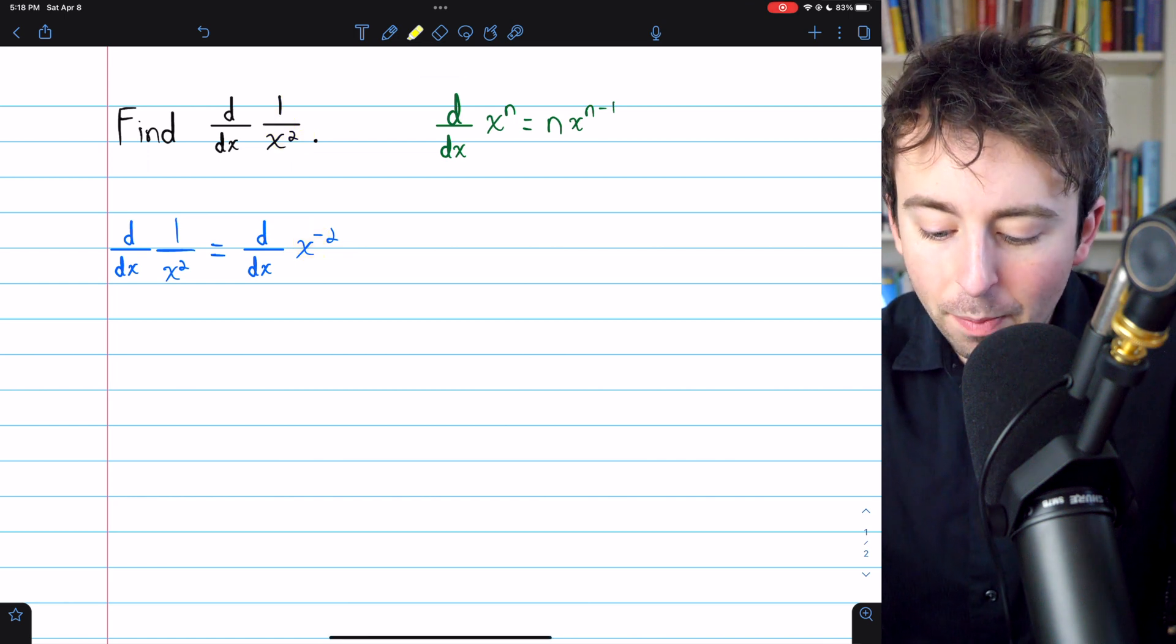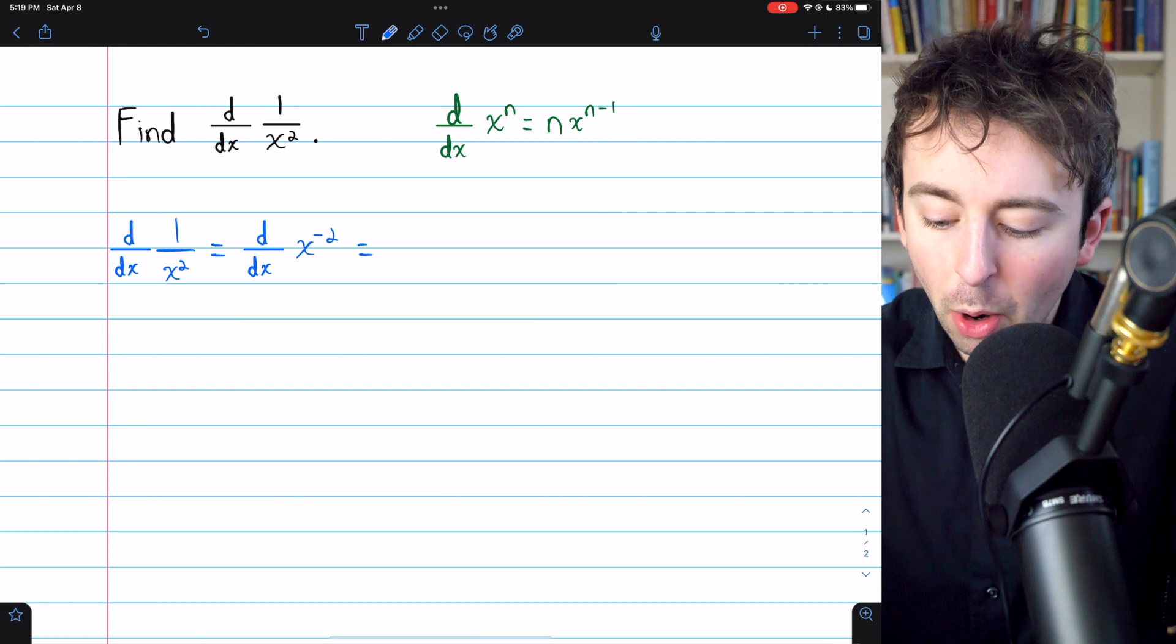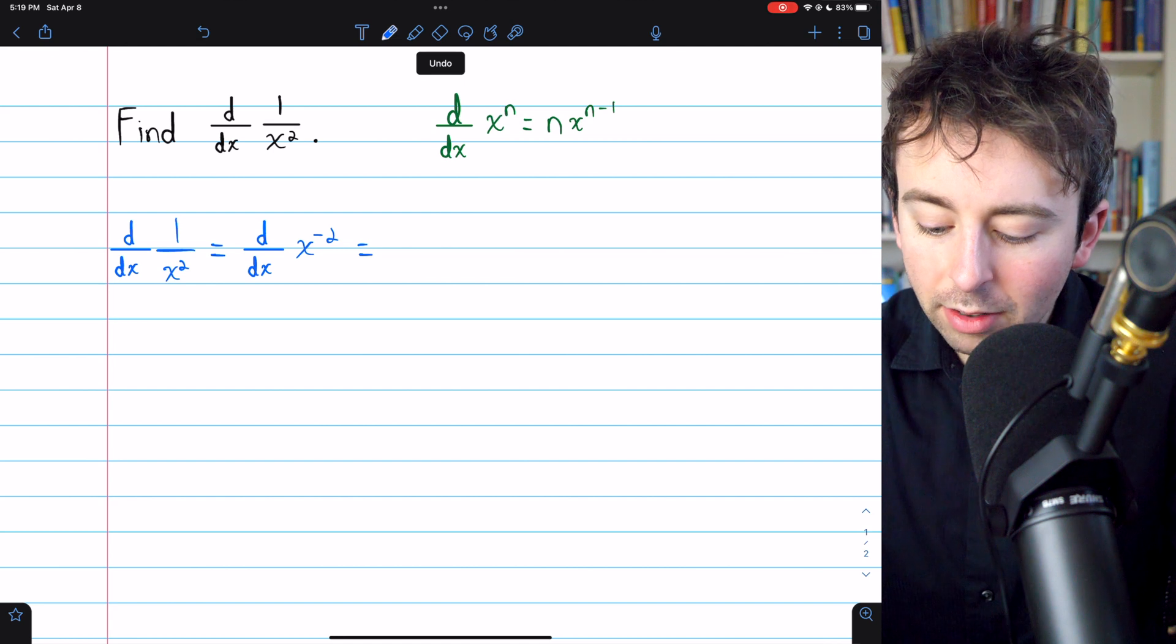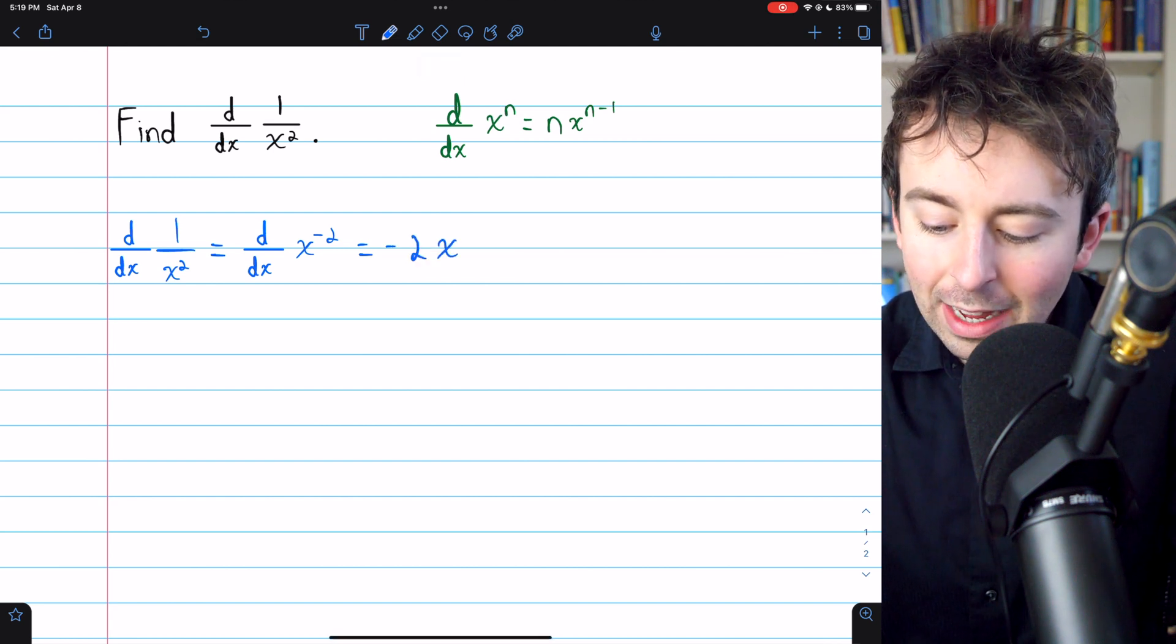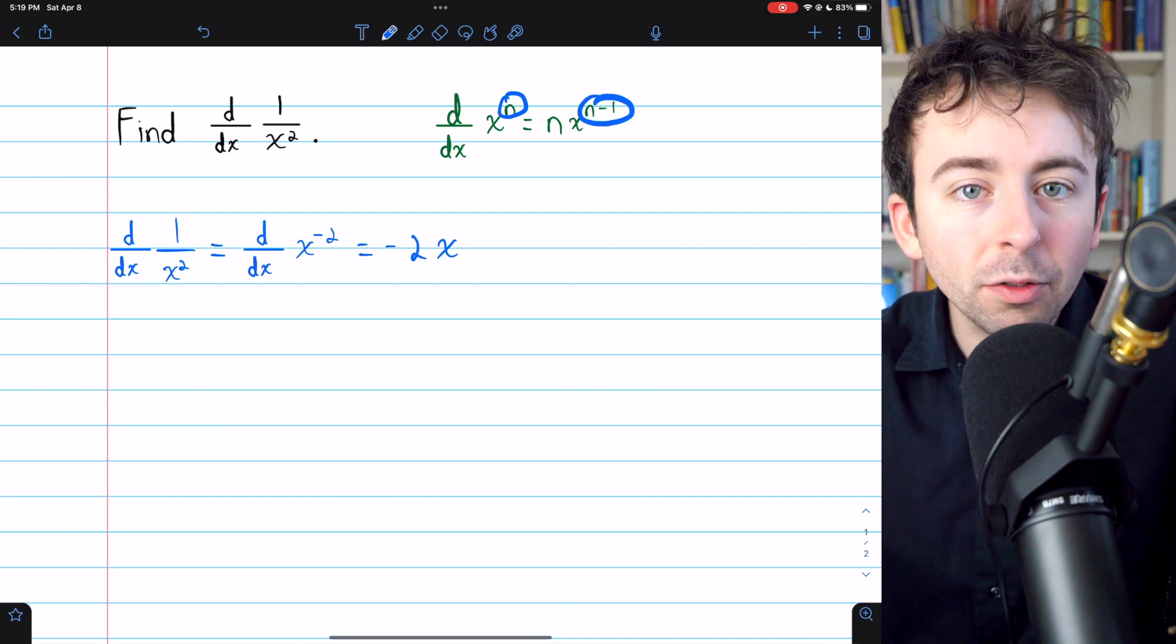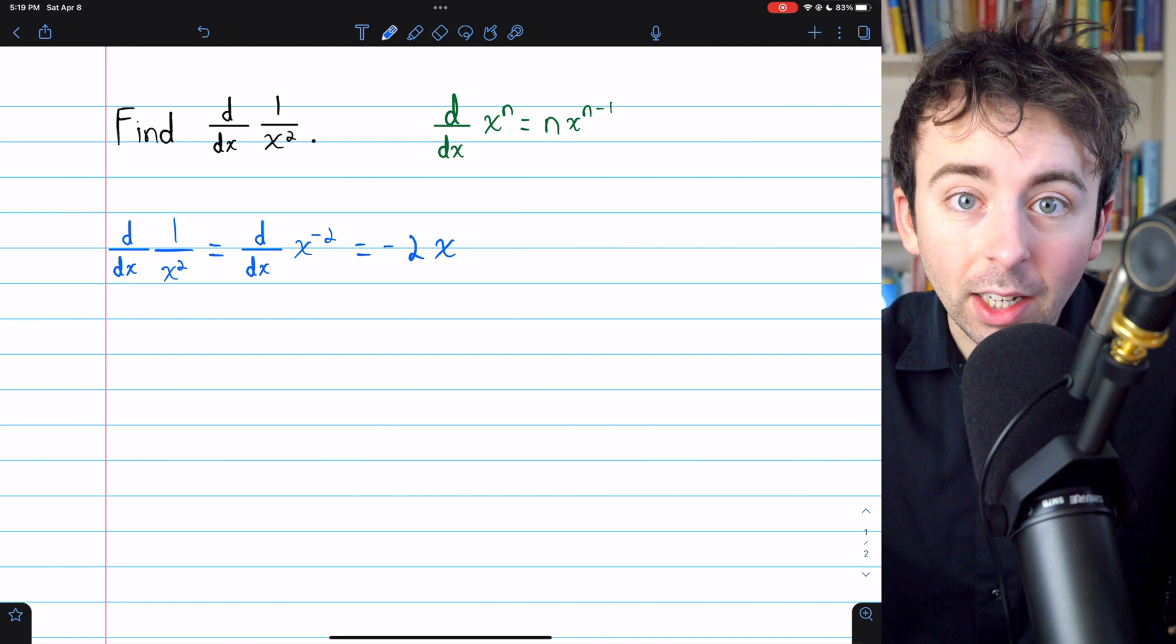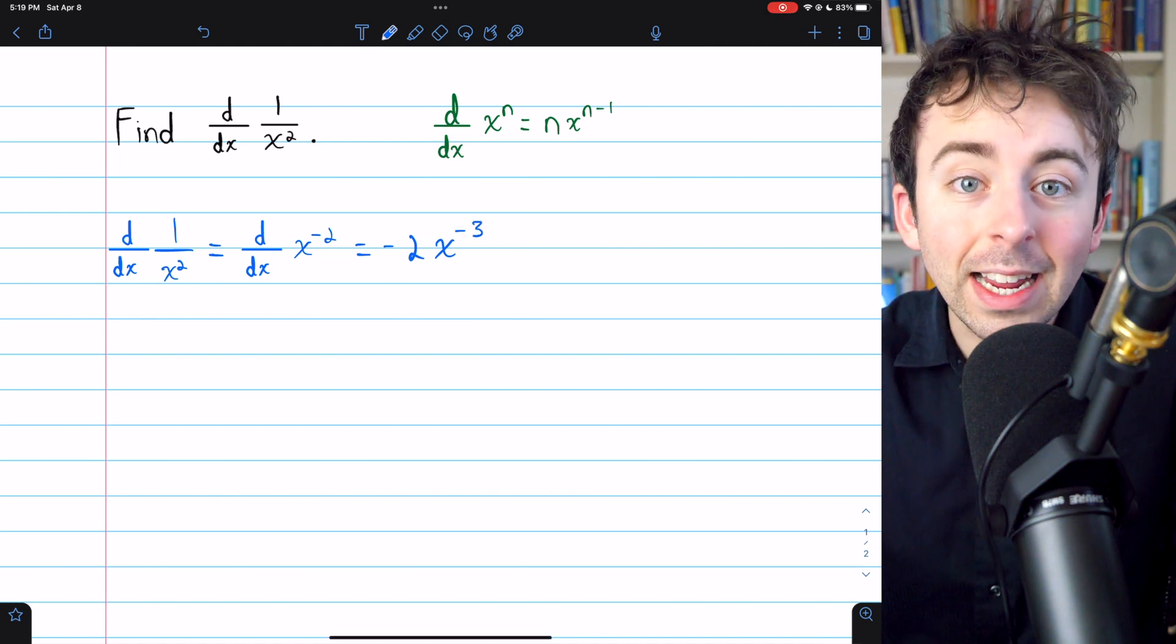And then we can apply the power rule, which tells us we need to bring the exponent down as a factor. In this case, the exponent is negative 2. So we have negative 2, and then we need to multiply by x and just reduce its exponent by 1. Its exponent was negative 2. If we reduce that by 1, the new exponent is negative 3.